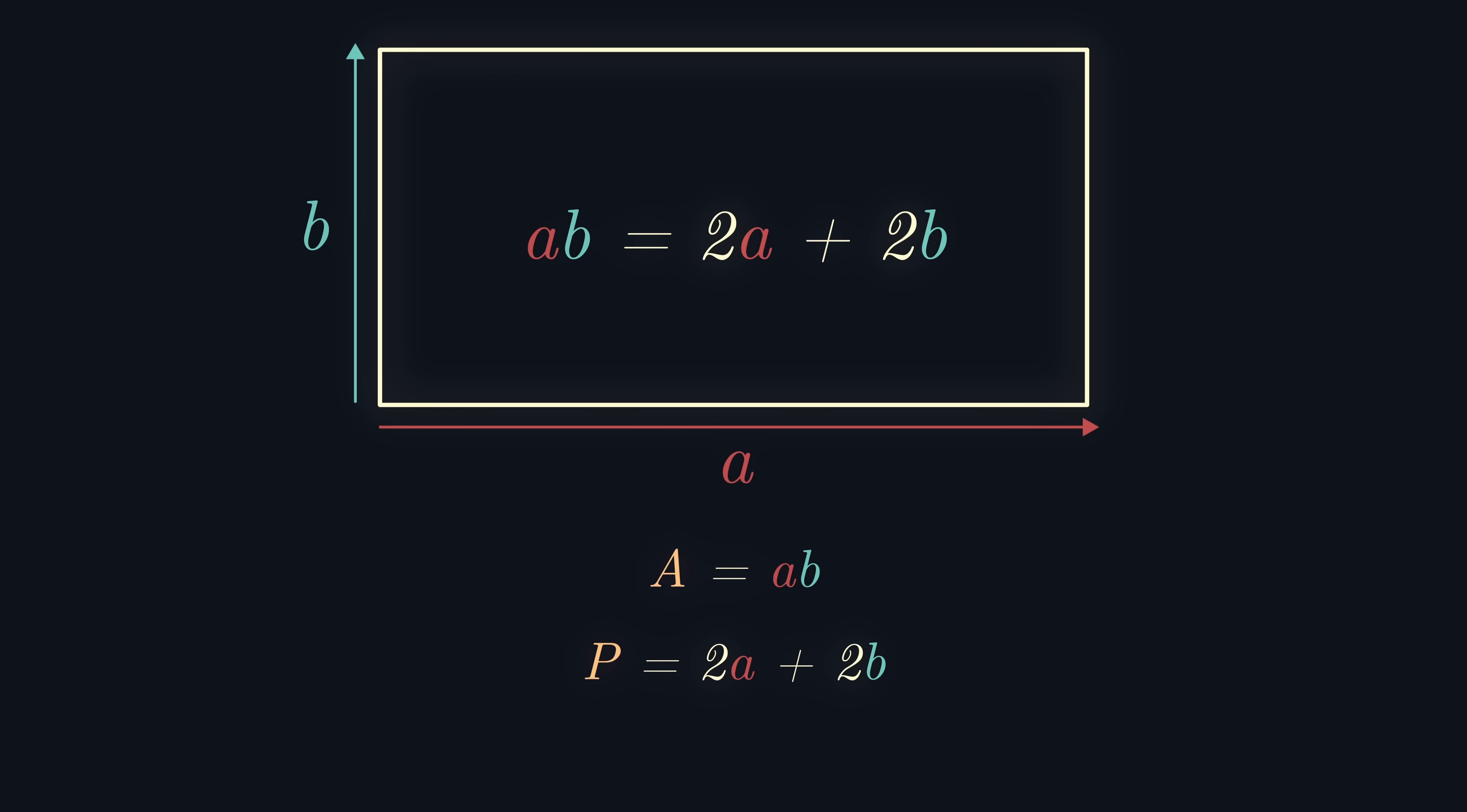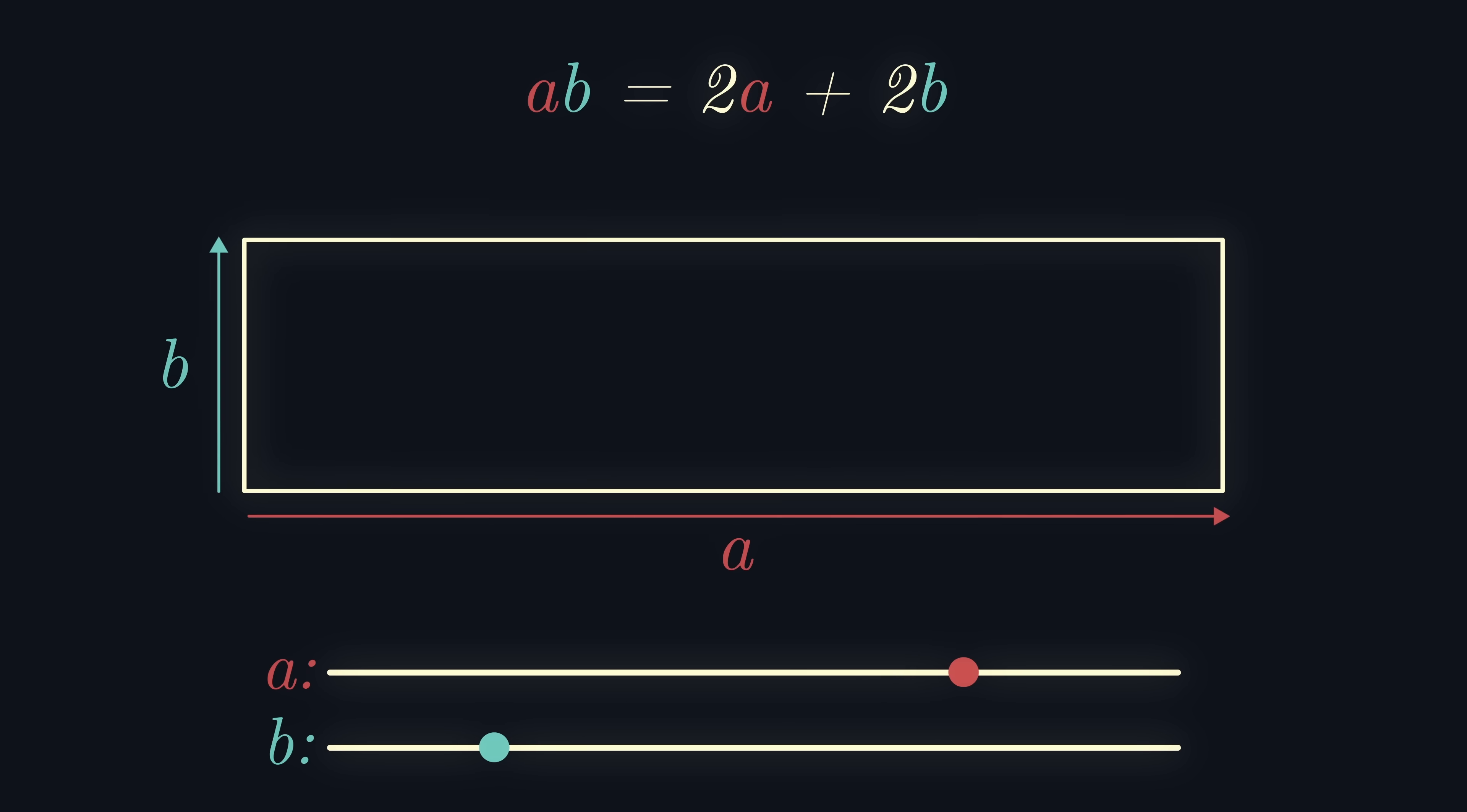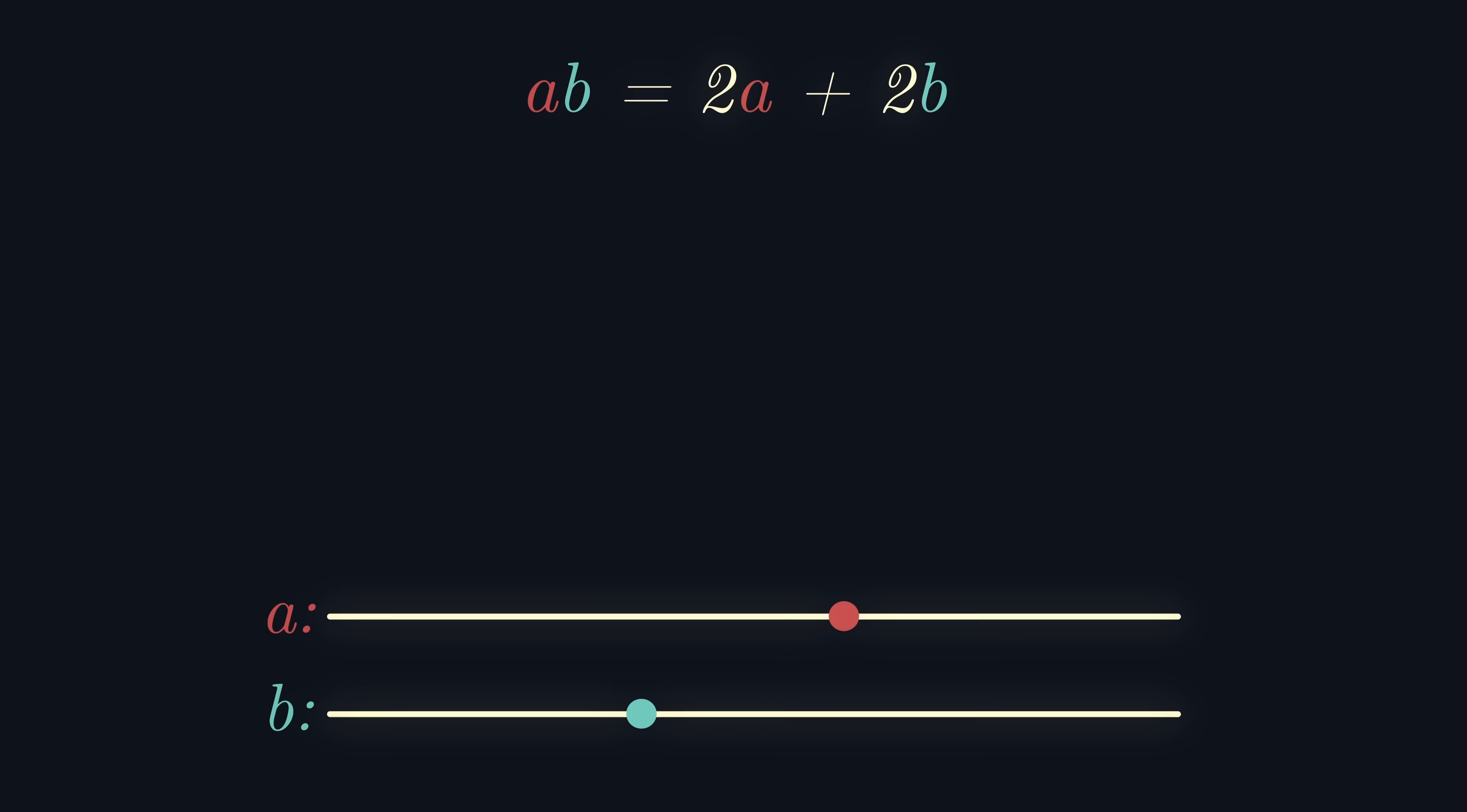Now, we have one equation and two variables, so it seems obvious that we can find such a rectangle, and in fact, an infinite family of rectangles. You can verify this by seeing that our equation rearranges to AB minus 2A equals 2B, and hence, A equals 2B divided by B minus 2.